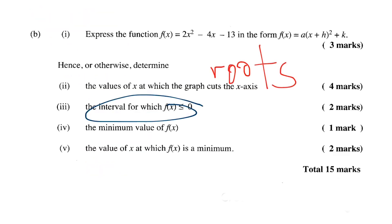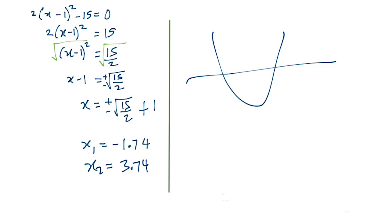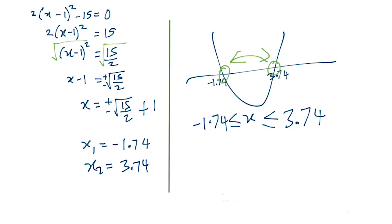We're asked to find the interval for which f(x) < 0. The graph of this function will look like a upward-opening parabola. When the graph is less than zero, it's the section below the x-axis between the two roots. So x will be less than zero between those two points: -1.74 < x < 3.74. That is the interval.